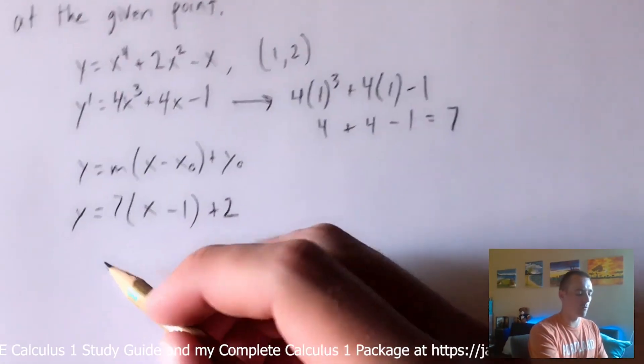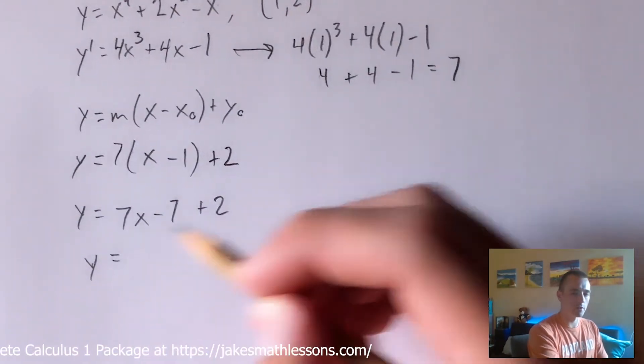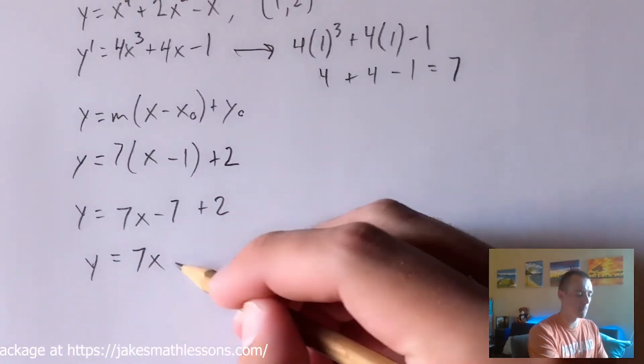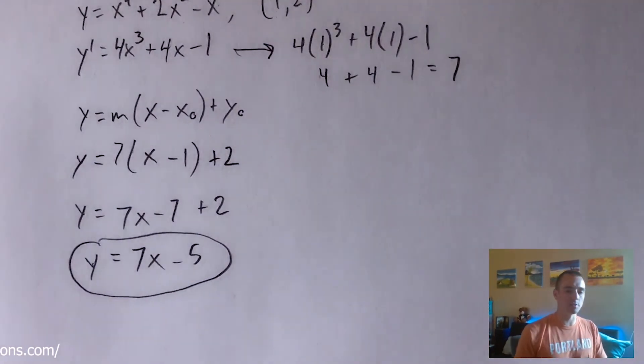And then from here what we want to do is simplify this. So distribute the 7 and then combine like terms giving us our tangent line equation of y equals 7x minus 5.